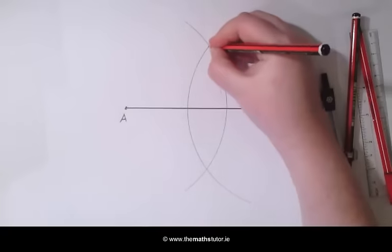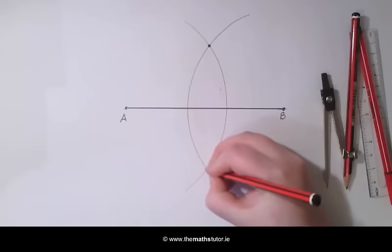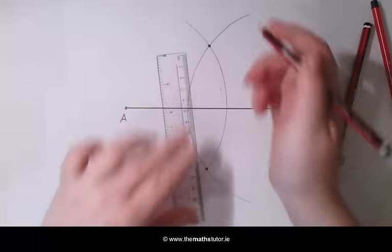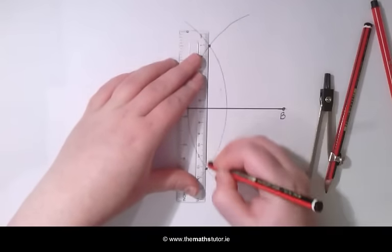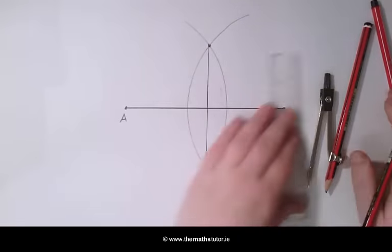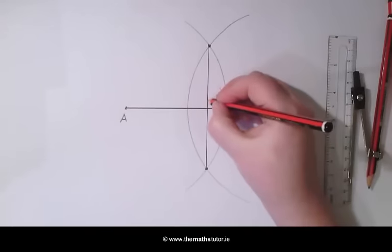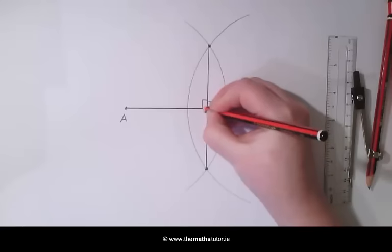Mark where these two arcs intersect and using our straight edge, we are going to join these together. And here we can see we have bisected the line AB at right angles to the line.